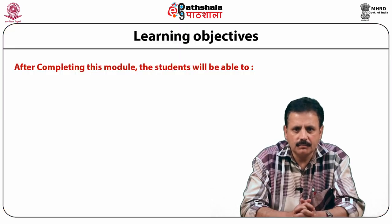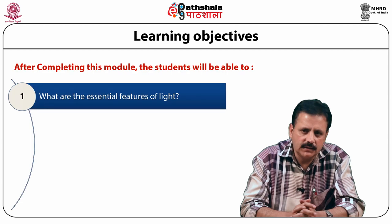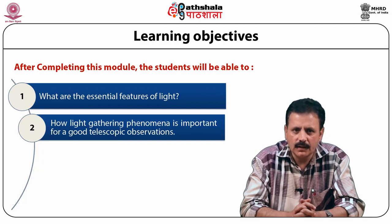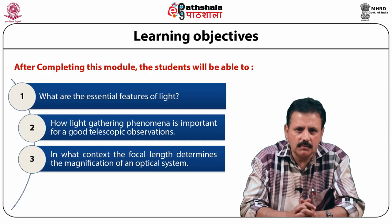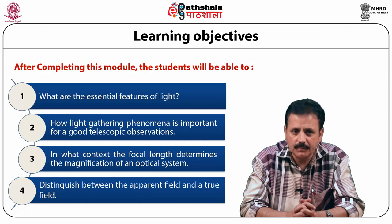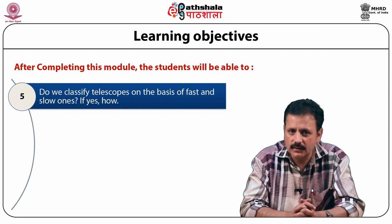After completing this module, the students will be able to answer the following things: What are the essential features of light? How is light gathering phenomena important for good telescopic observations? In what context does the focal length determine the magnification of an optical system?